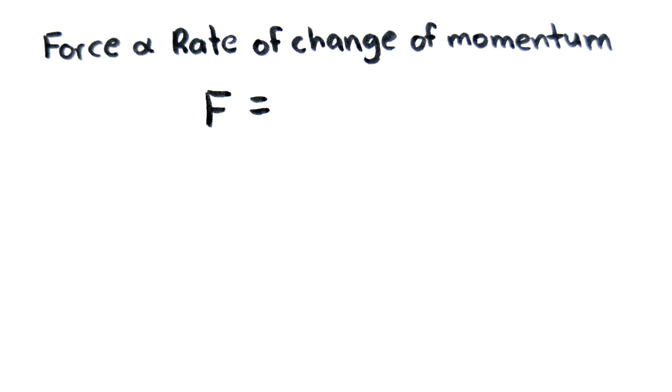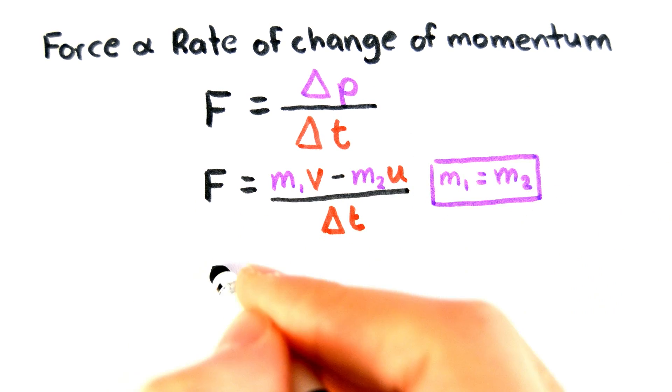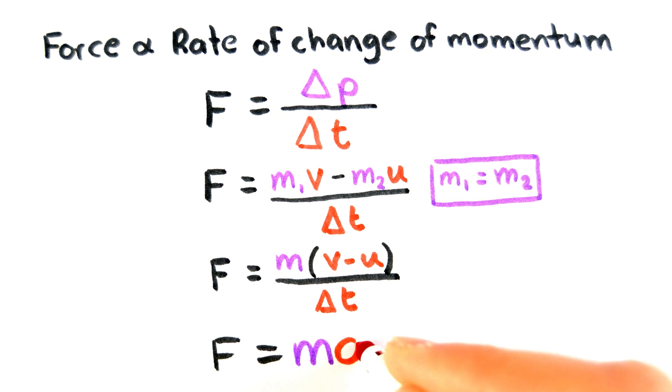This gives us the formula f equals change in momentum over change in time. For objects of constant mass, this formula can be rearranged to give the much more familiar f equals ma.